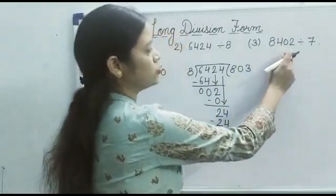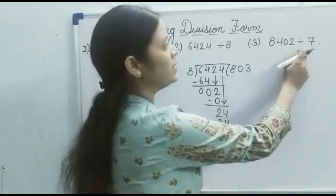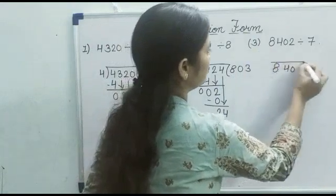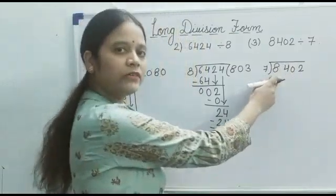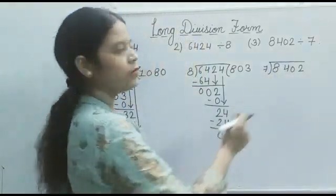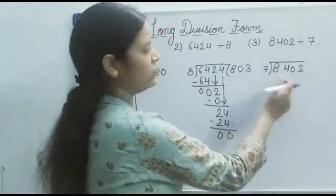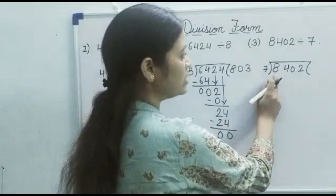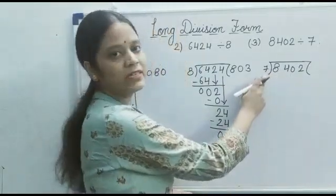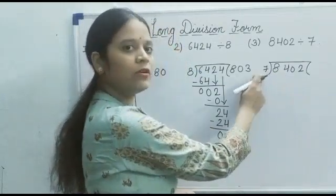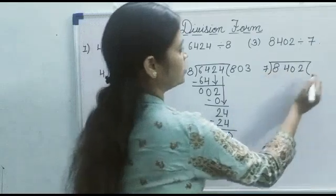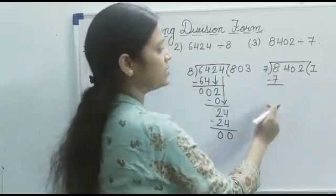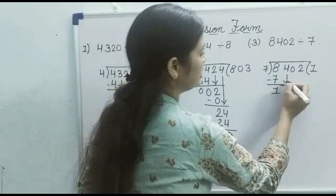Now we take the next example: 8402 divided by 7. First we write it in the long division format. Here we use the table of 7, so we must know the table of 7. The first digit of the dividend is greater than 7, but 8 does not come in the table of 7. So we take just smaller than 8, which is 7 — 7 ones are 7. Then 8 minus 7 is 1.